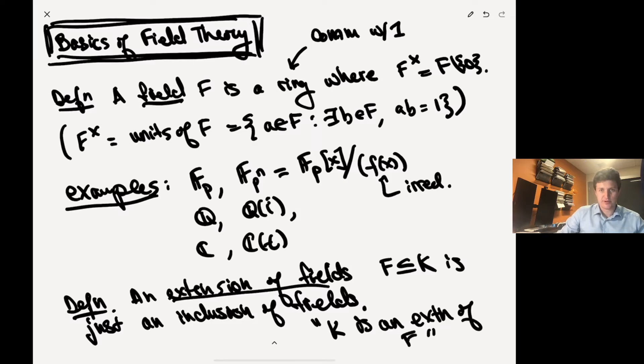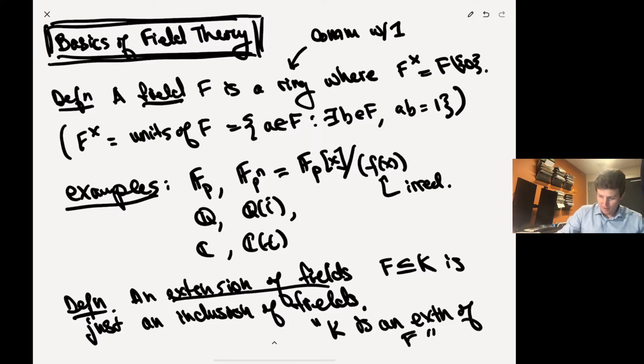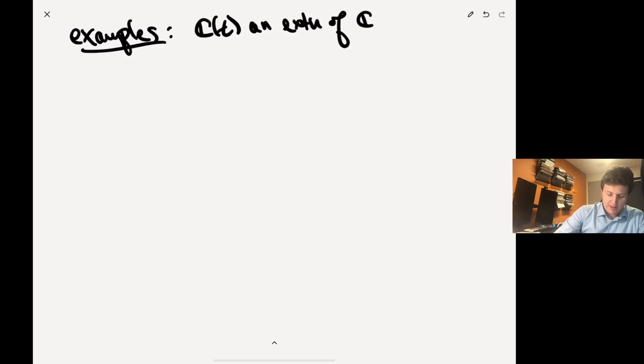Alright, so for example, here are the examples. C(t) is an extension, so this is an extension of C. Q(t) is an extension of Q.